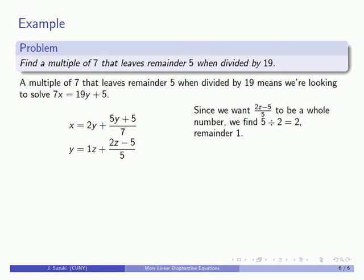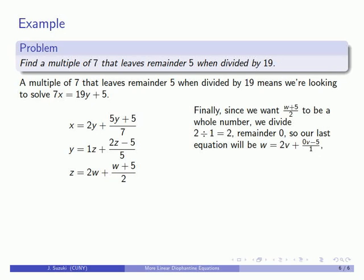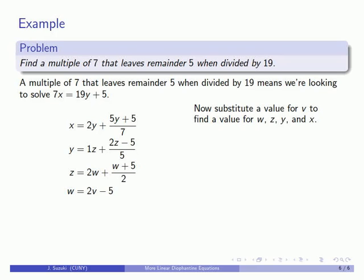I want (2z minus 5) / 5 to be a whole number, so I divide 5 by 2 to get 2 with remainder 1. That tells me the next equation is z equals 2w plus (1w + 5) / 2. I want (w + 5) / 2 to be a whole number, so I divide 2 by 1 to get 2 with remainder 0. Our last equation is w equals 2v plus (0·v minus 5) / 1. Since I'm dividing by 1, that last term is automatically a whole number, so it simplifies to w equals 2v minus 5. At this point I can substitute a value for v to find w, then z, then y, then x, and finally my multiple of 7.